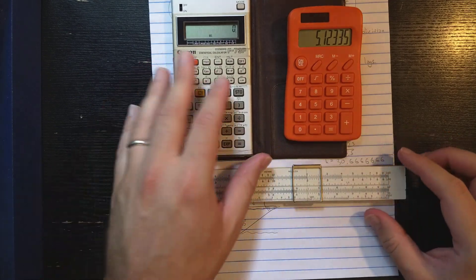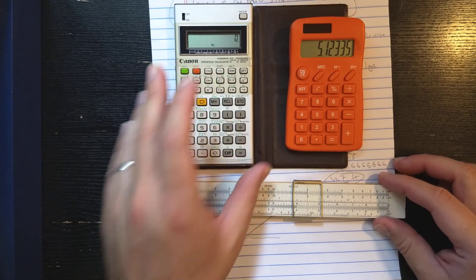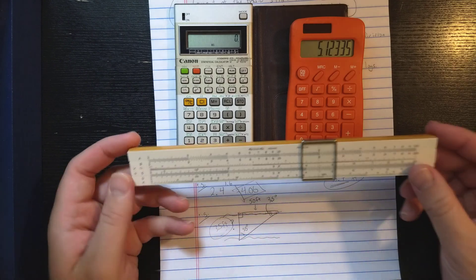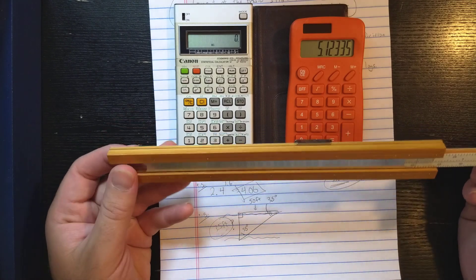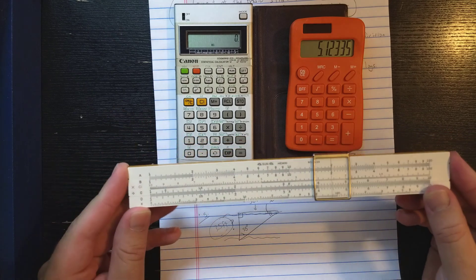So I think just the appearance of something like this makes the math seem more complicated, right? Whereas the elegance of this, I think, I don't know, I really wish it had been the way that I had learned.